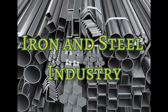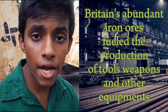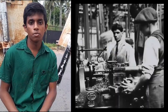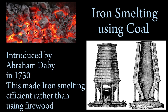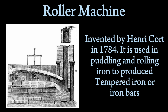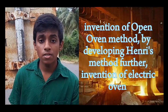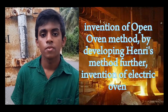Now shifting gears to the iron and steel industry: Britain's abundant iron ores enabled the production of tools, weapons, and other equipment. Abraham Darby's 1730 iron-smelting method using coal, Henry Cort's rolling machine, and Henry Bessemer's 1856 steel production method marked significant milestones. The invention of the electric furnace further propelled the industry.